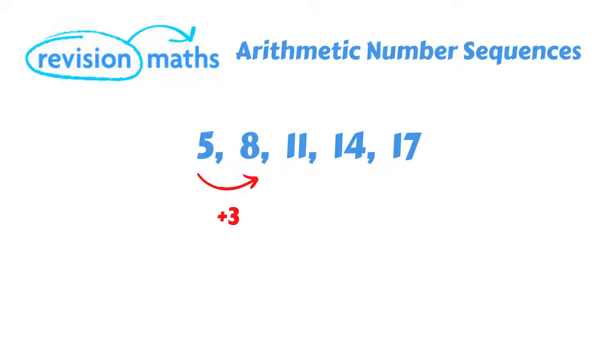Looking at the sequence, we can see the difference between 5 and 8 is plus 3, and the difference between 8 and 11 is also plus 3. If we do the same for the rest of the sequence, we can see the pattern continues to be plus 3. So we are adding 3 each time.